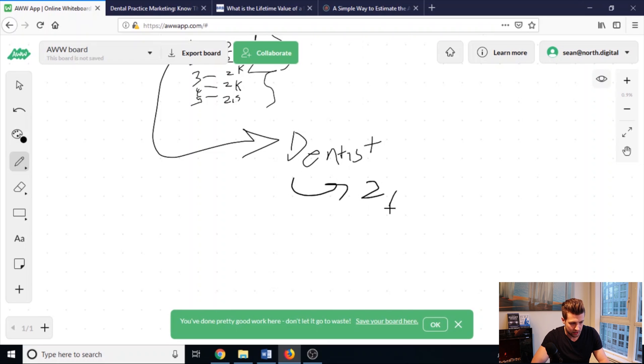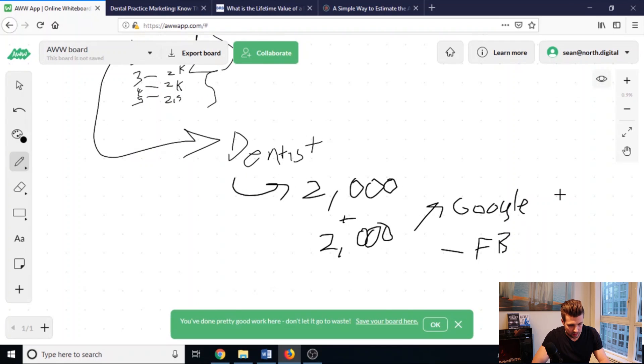Now, our dentist pays us $2,000 per month in management fee, and an additional $2,000 per month in ad spend, and this ad spend here goes to Google, and it goes to Facebook. The way we do it at our agency is we do about 80% Google ads, and 20% Facebook ads.